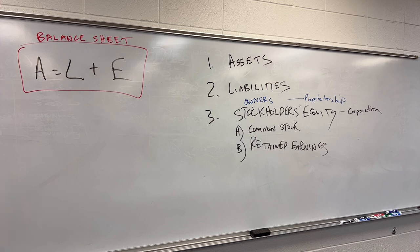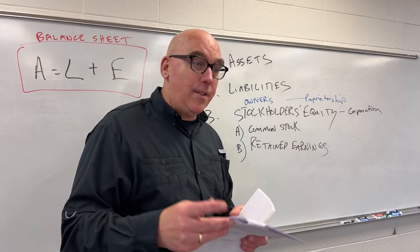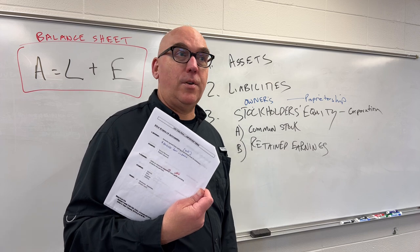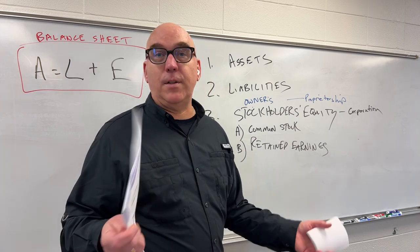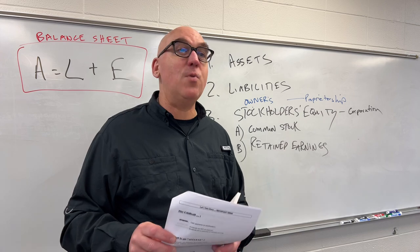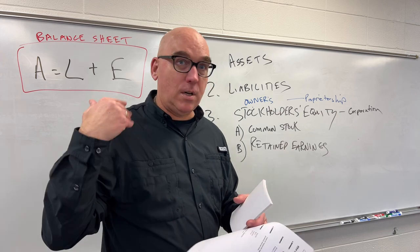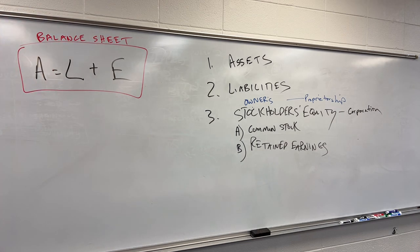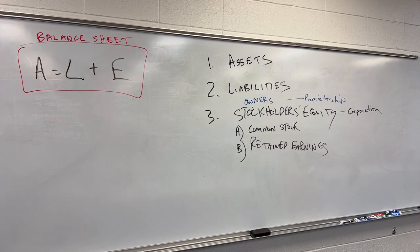If you are in my class, the handy handbook is available on Blackboard. If you're out there in YouTube viewing land and would like it, send me an email. There are five types of accounts: assets, liabilities, equity — that's one, two, three — and we need to do four and five: revenues and expenses.